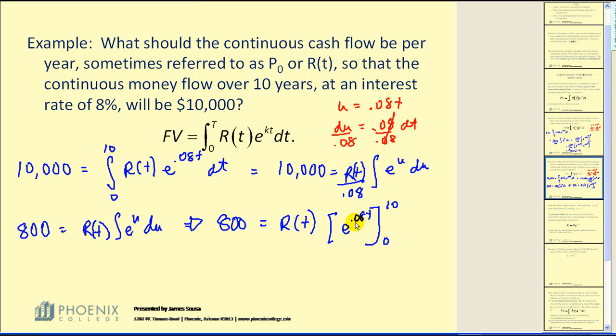Now I've already evaluated this to save a little bit of time again. We get 800 is equal to R of T times 1.2255. And if we divide both sides by that value, we would have our annual money flow.